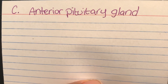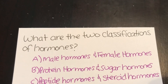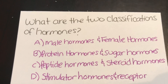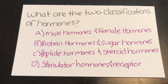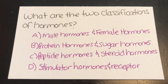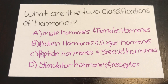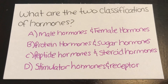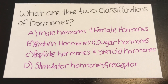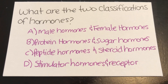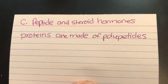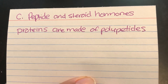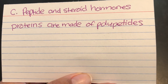What are the two classifications of hormones? A, male hormones and female hormones. B, protein hormones and sugar hormones. C, peptide hormones and steroid hormones. Or D, stimulator hormones and receptor hormones. Answer: C, peptide and steroid hormones, because proteins are made of polypeptides. Good job!